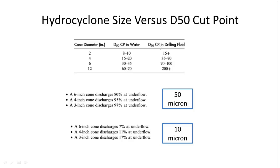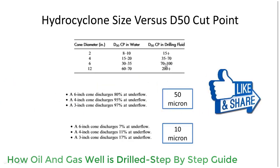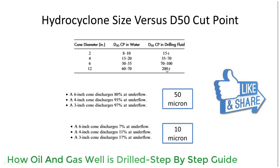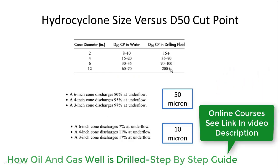If we look at the D50 cut point for drilling fluid using the same cone diameter sizes, the cut point is larger or coarser. For example, a 2 inch cone diameter will remove 15 micron-plus solid particles. A 4 inch will be 35 to 70, a 6 inch will be 70 to 100, whereas a 12 inch will have a D50 cut point of 200 plus microns.